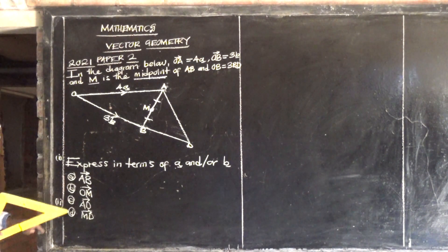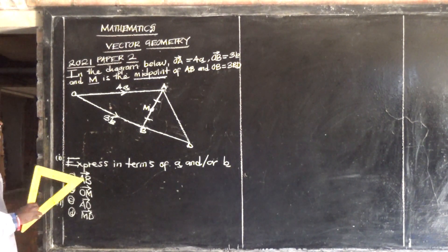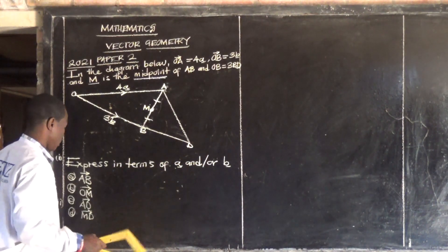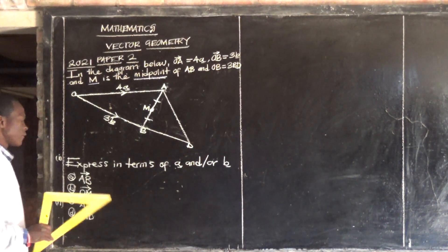And another statement: OB is equal to 3BD. I think I'm going to use it later on. Now the first question is saying express in terms of a and b.